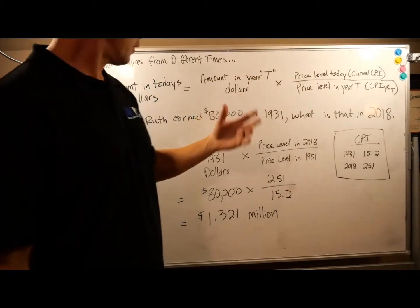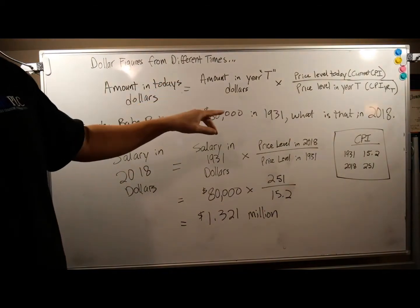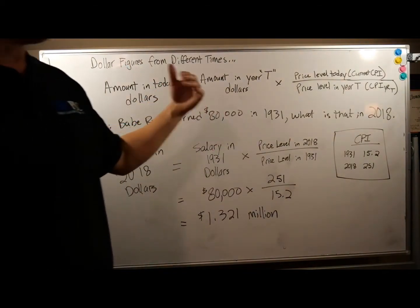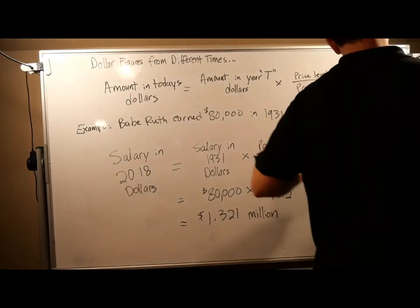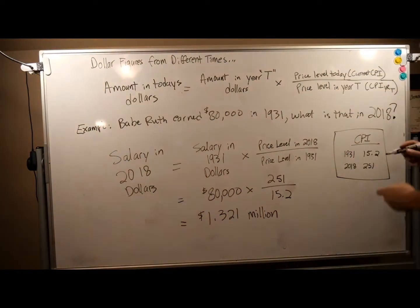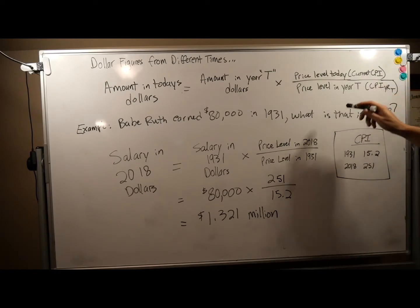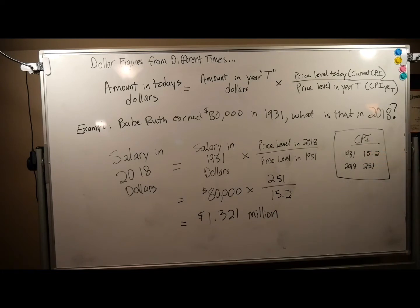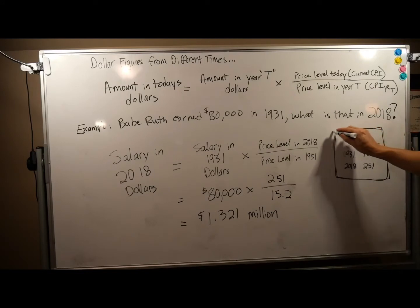So if we're trying to figure out Babe Ruth — he earned $80,000 in 1931 — what is that in terms of 2018 dollars? Our current CPI we're looking for is 2018, and our year T is 1931. And I'm just giving you — and if you do the reading, they give it in there — the CPI scores, your index scores.